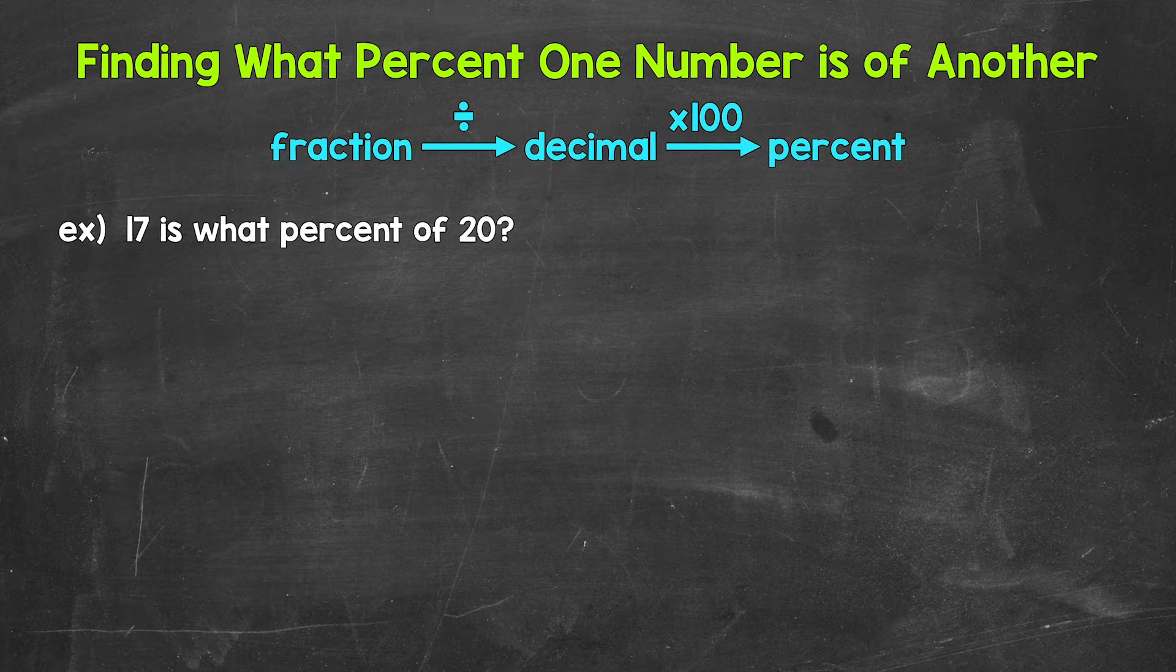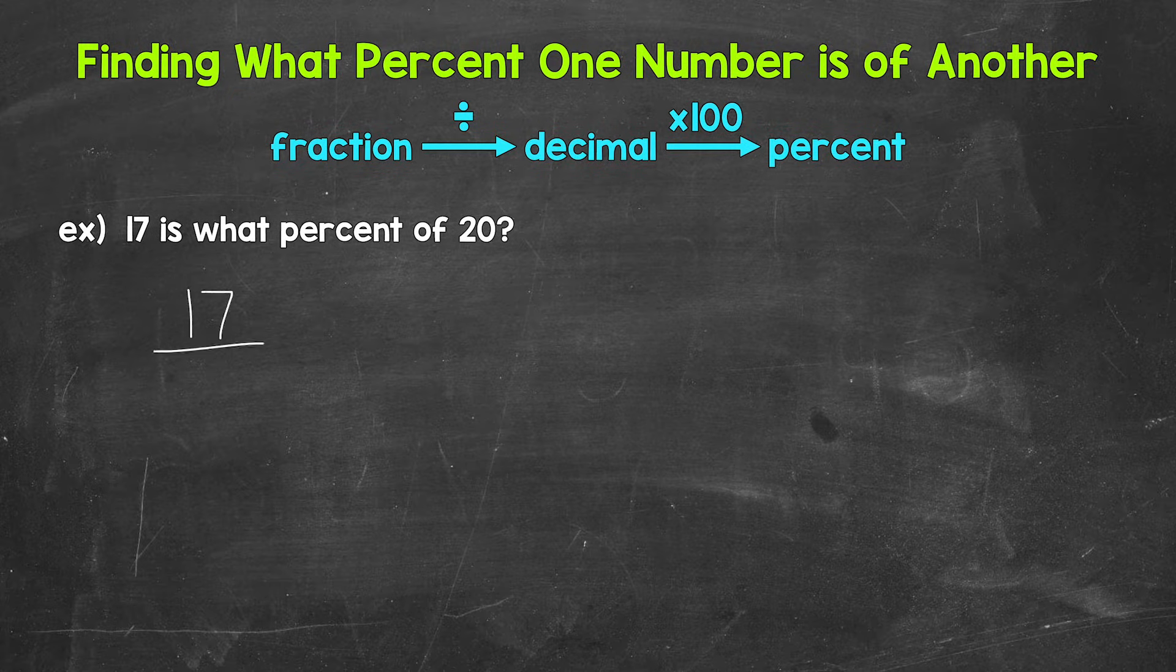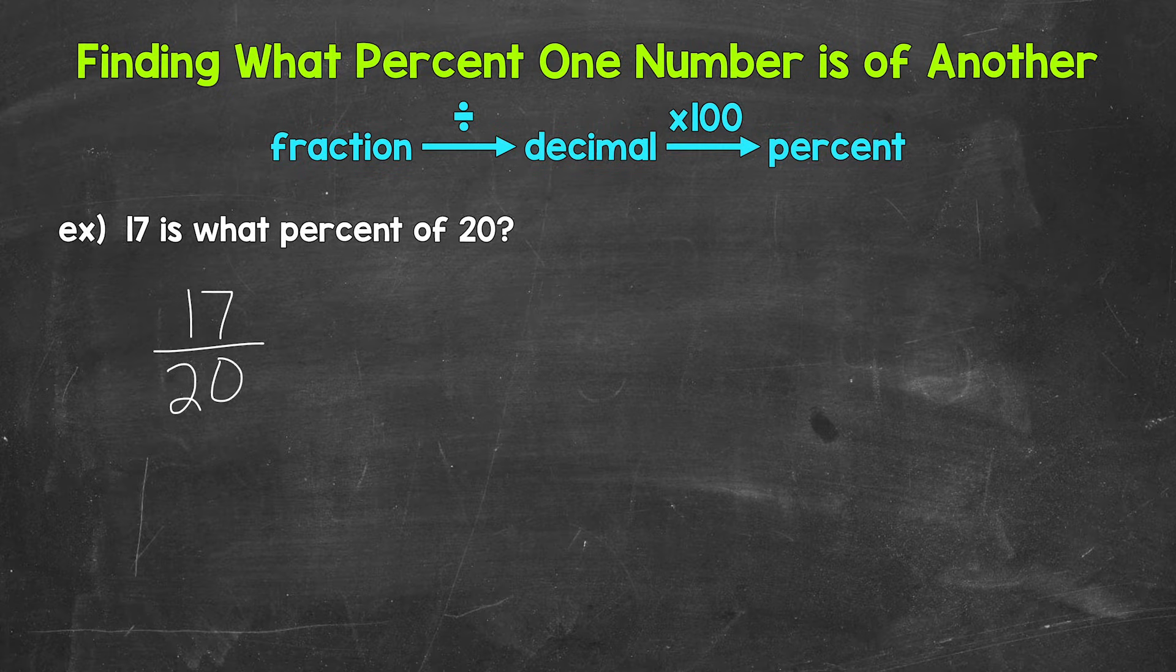We can even think of this like a score on a quiz. We got 17 questions out of 20 correct. So what percent is that? So to set this up as a fraction, we have 17 over 20.